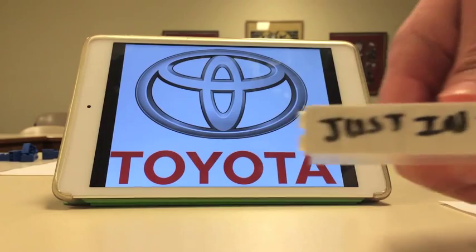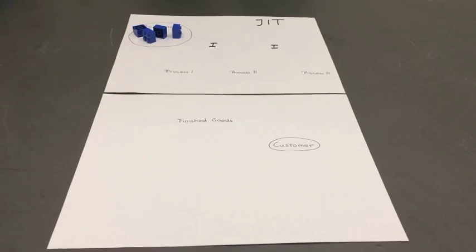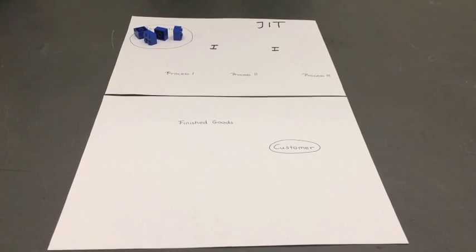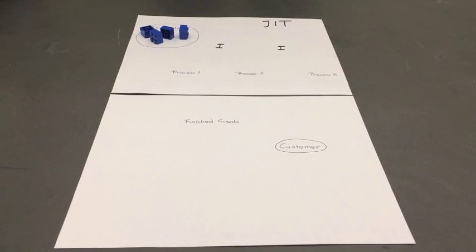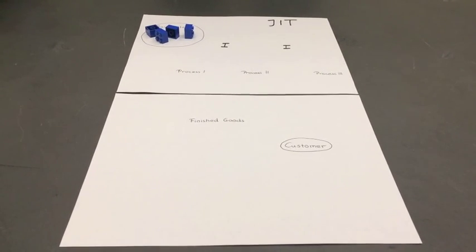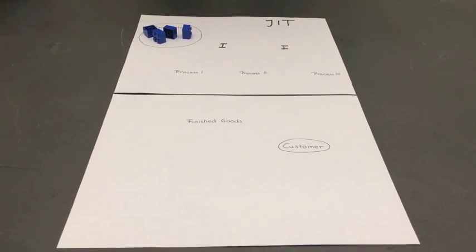The first one is just-in-time. The just-in-time production is based on four principles. The first one is a pull system, also called Kanban system. What you see here is how a manufacturing process typically works. You have raw materials that move through the value chain.